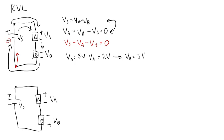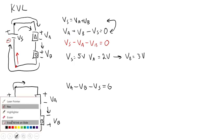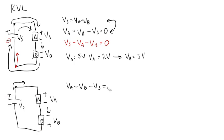So again, I'm going to use the second method I presented above where I start there and go around the loop. I have VA and I'm going to have a minus VB and a minus VS equals 0. I have my same numbers as before. I'm going to have VA equals 2, VS equals 5.